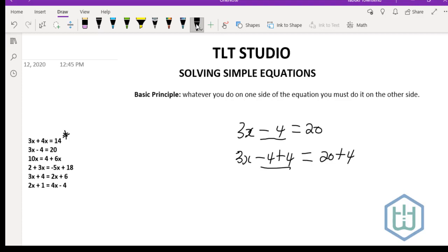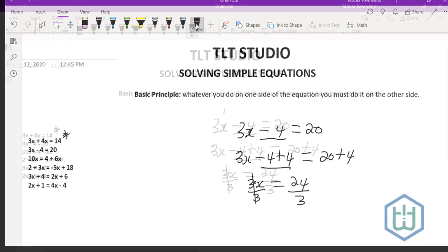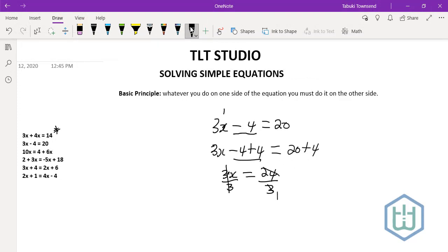The new equation that we have now is 3x equals 24. Now to get x by itself, because remember x is multiplied by the 3, we're going to divide by 3 to cancel it out. 3 into 3 is 1, 3 into 24 is 8, therefore x equals 8.